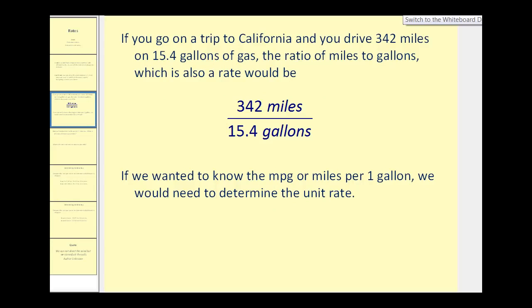If you go on a trip to California and you drive 342 miles on 15.4 gallons of gas, the ratio of miles to gallons, which is a rate, would be written as we see here, 342 miles to 15.4 gallons, or often we just say 342 miles per 15.4 gallons.